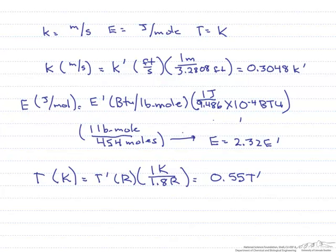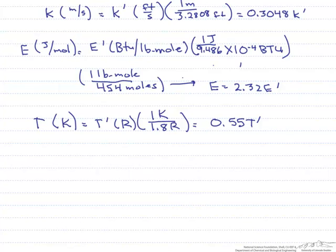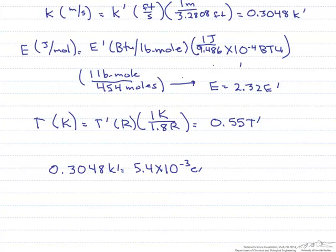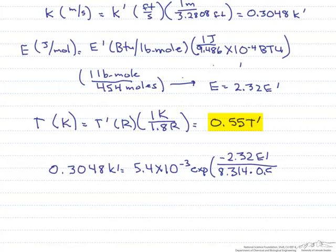Now let's put them all together. So we have, replacing our k: 0.3048 k prime equals 5.4 times 10 to the minus 3, exponential of minus 2.32 E prime divided by 8.314 times 0.55 T prime.